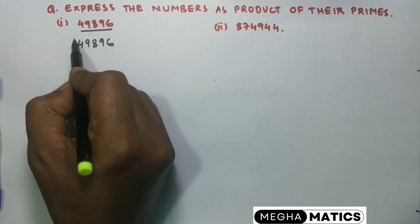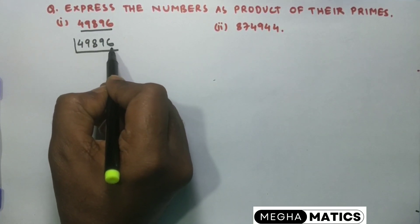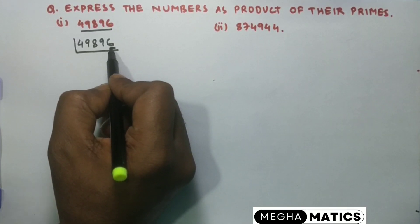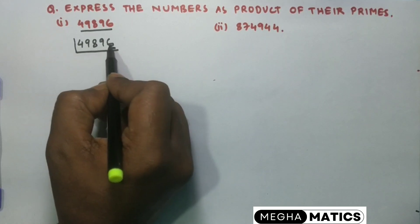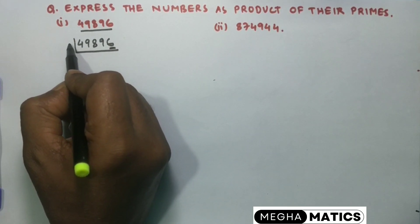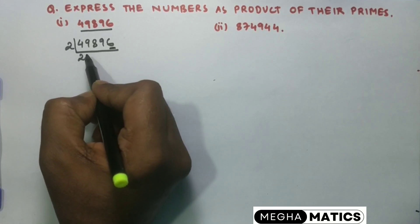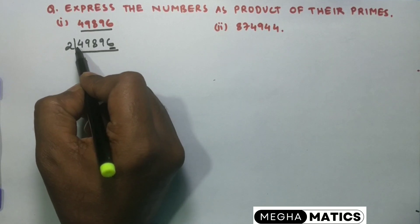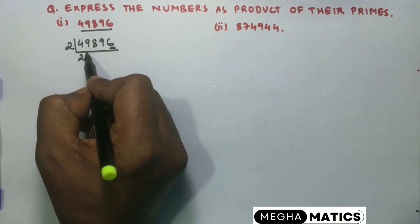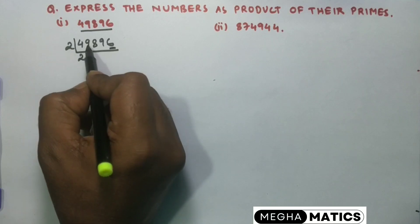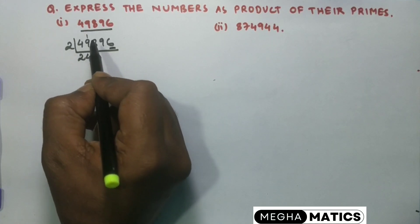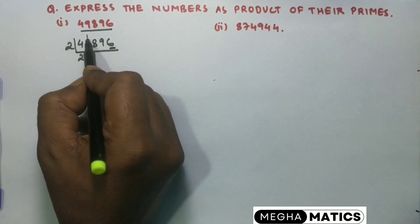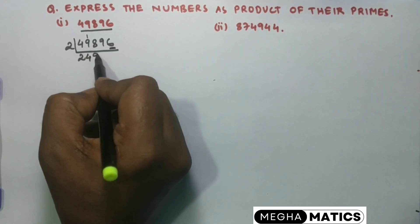If we start factorizing 49,896, since the unit digit is 6, we'll start dividing by 2. If the unit digit is 6, we can say this number is divisible by 2. Dividing: in 4 we get 2 times, then the next digit is 9. Since 9 is not fully divisible, we divide 9 by 2 and get 4 times — 2 fours are 8 — so 9 minus 8 is 1. Then 1 and 8 becomes 18, and 18 divided by 2 gives 9.